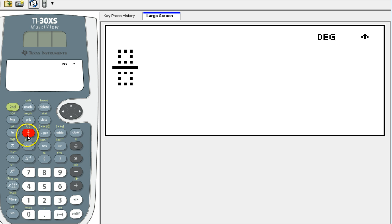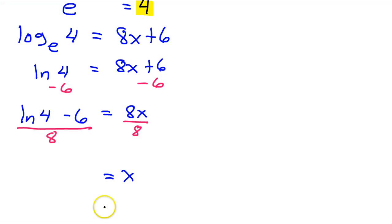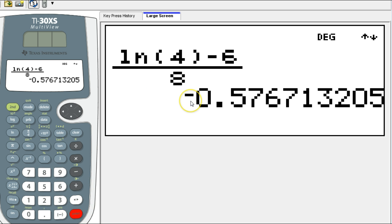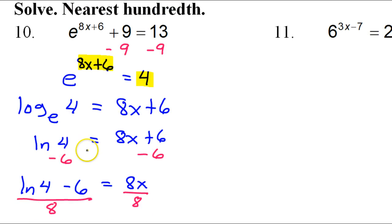So fraction mode, so natural log of 4, close your parentheses please, minus 6, then all that is over 8. Just double check. Natural log 4 minus 6 over 8. So that gives us negative 0.58. Got to round up. So that would be the answer to number 10.